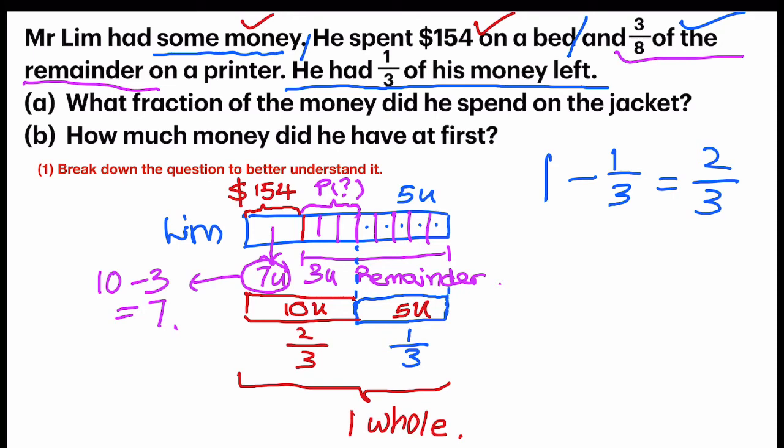So now I've drawn my model. I go back to the question, and I totally understand the question already. Because the most important thing is actually this part: 1/3 of his money left. So I compare, and now I can jump back to the question and see what the question wants. So first part, what fraction of the money did he spend on the... Okay, there is a typo. It's not supposed to be jacket, it's supposed to be on the bed. So what is the fraction of money? Now we look at the fraction of the money. The entire thing is actually 1 whole, but now we know that there are 15 units. So 15 units in all. How many units spent on the bed? $154, 7 units. So I'm going to write 7/15 on top, and that is my answer for A. That's all. Everything can be solved using the model.